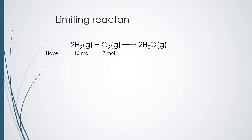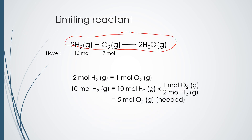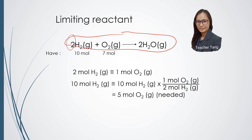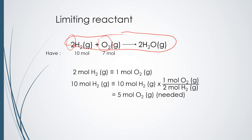To determine which one is the limiting reactant in a reaction, we must compare both reactants in terms of number of moles. For example, in this reaction, initially we have 10 moles of hydrogen gas and 7 moles of oxygen gas. Based on the balanced chemical equation, 2 moles of hydrogen gas require 1 mole of oxygen to react with. So if we have 10 moles of hydrogen gas, we actually need 5 moles of oxygen gas.